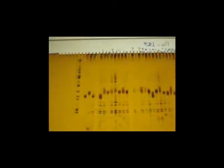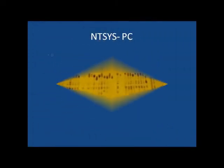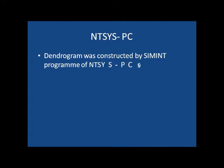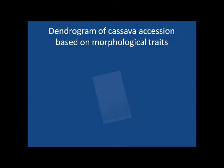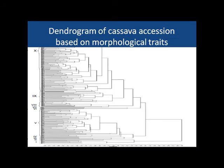SSR markers are scored as 0 and 1 for absence and presence of alleles. The dendrogram is constructed using DARwin PC software. This is the dendrogram of cassava based on morphological traits. Cluster 10 consists of the largest number of accessions, including accessions from CIAT. Cluster 7 consists of accessions having good starch content and yield per plant. Clusters 1 and 2 consist of true seed cassava selections from India.